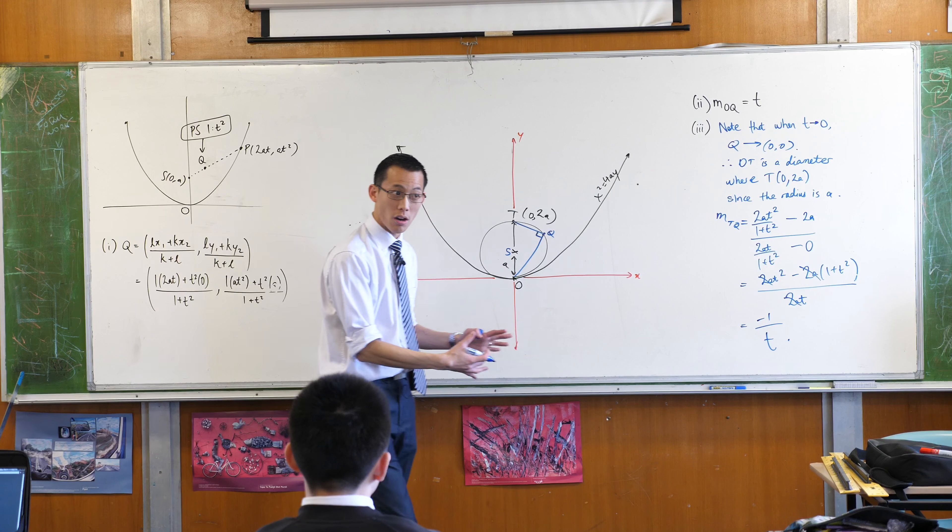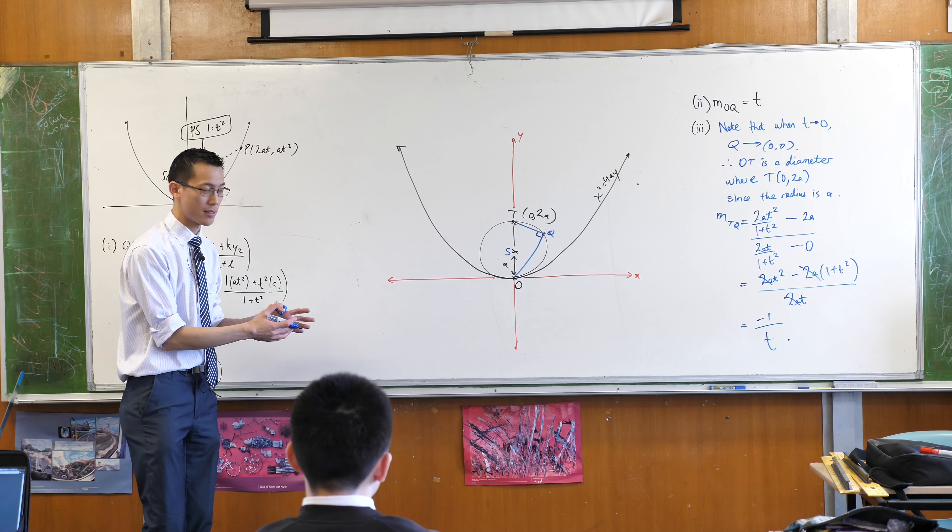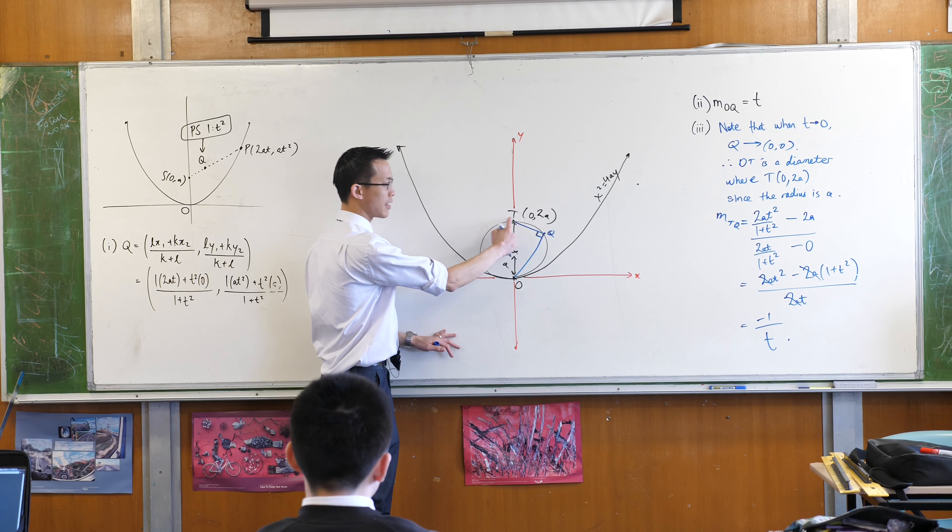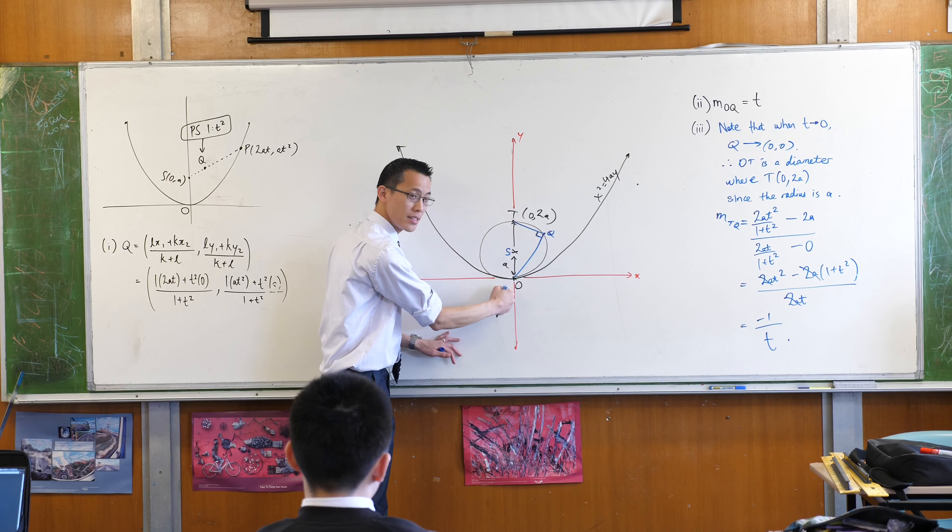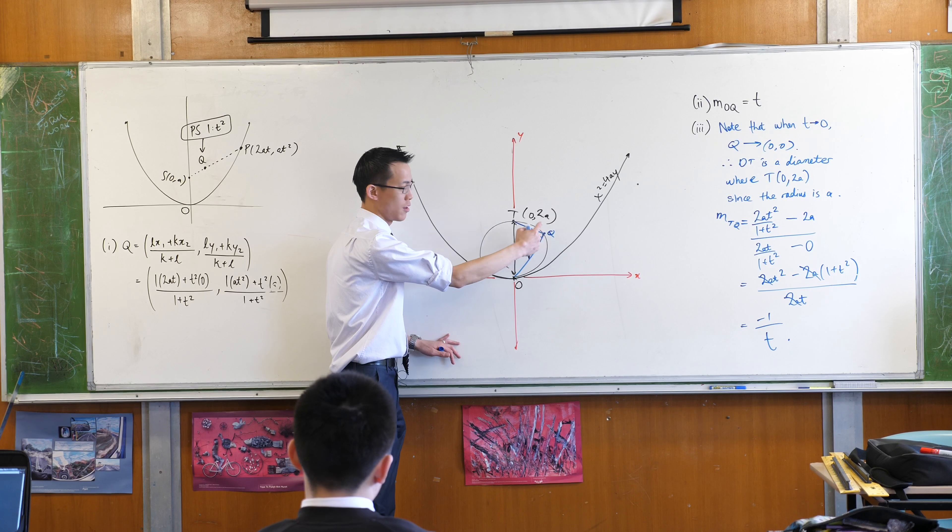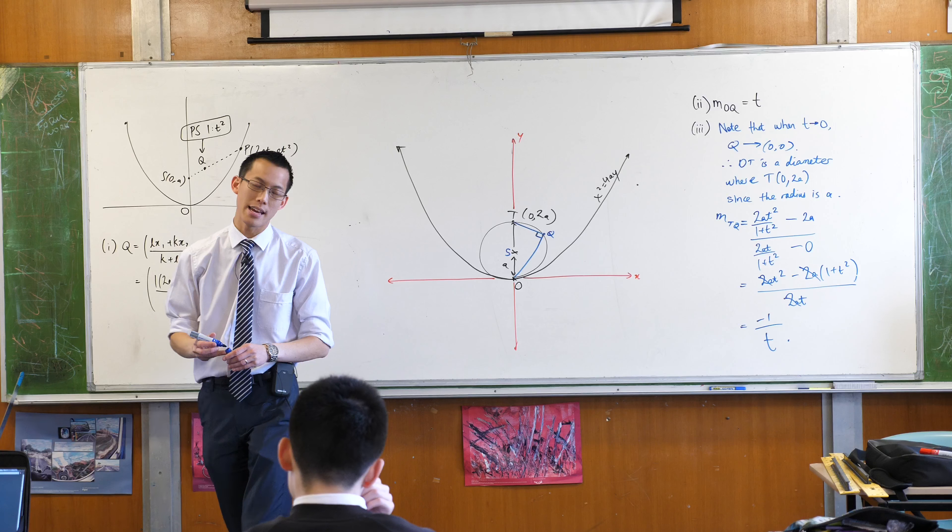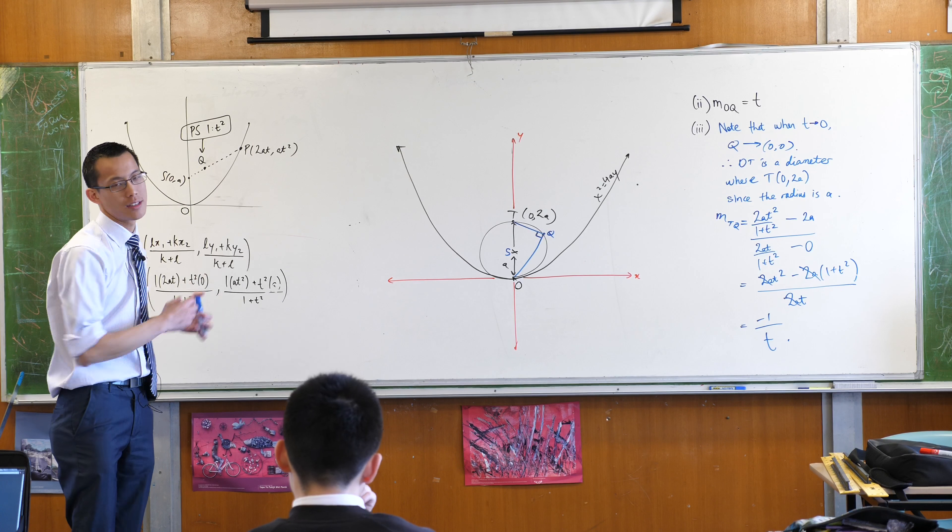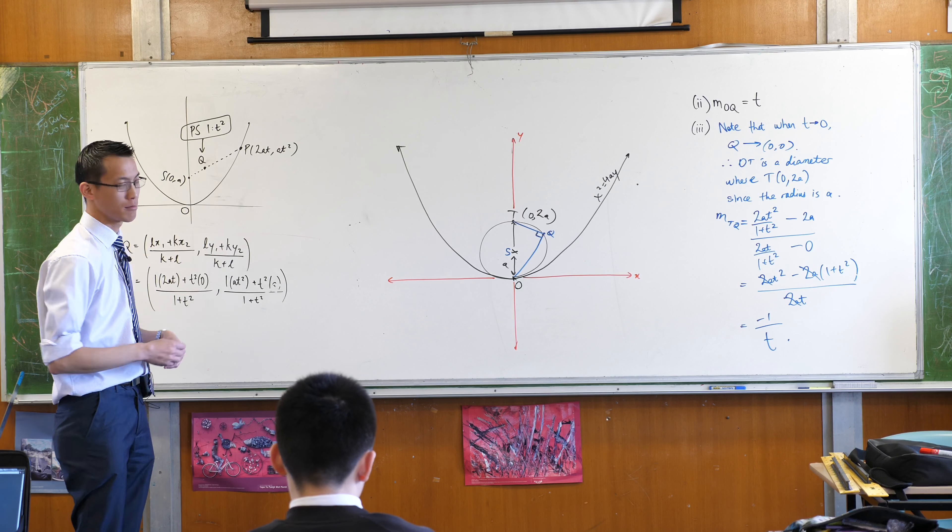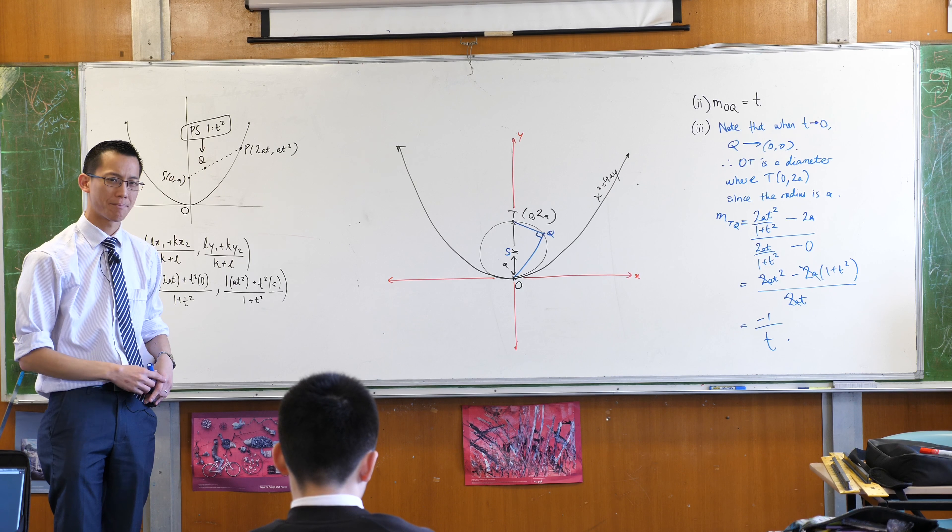So I'm not going to finish this off. That was the crucial piece. I can now say, aha, TQ is perpendicular to OQ, which means this is an angle in a semicircle because it's 90 degrees. Hence, Q is on a circle. Make sense?